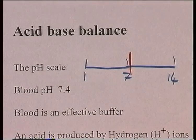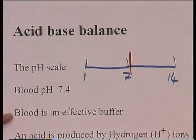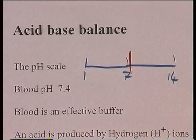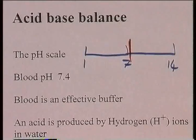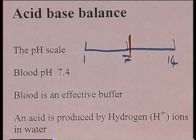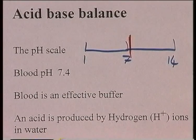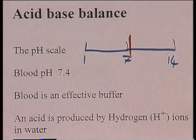The blood itself is an effective buffer. A buffer is something which can absorb hydrogen ions — things that make a solution acid — without changing the pH. But eventually it will be overwhelmed, and there will be changing of the pH. So it's very essential that the kidney regulates it.